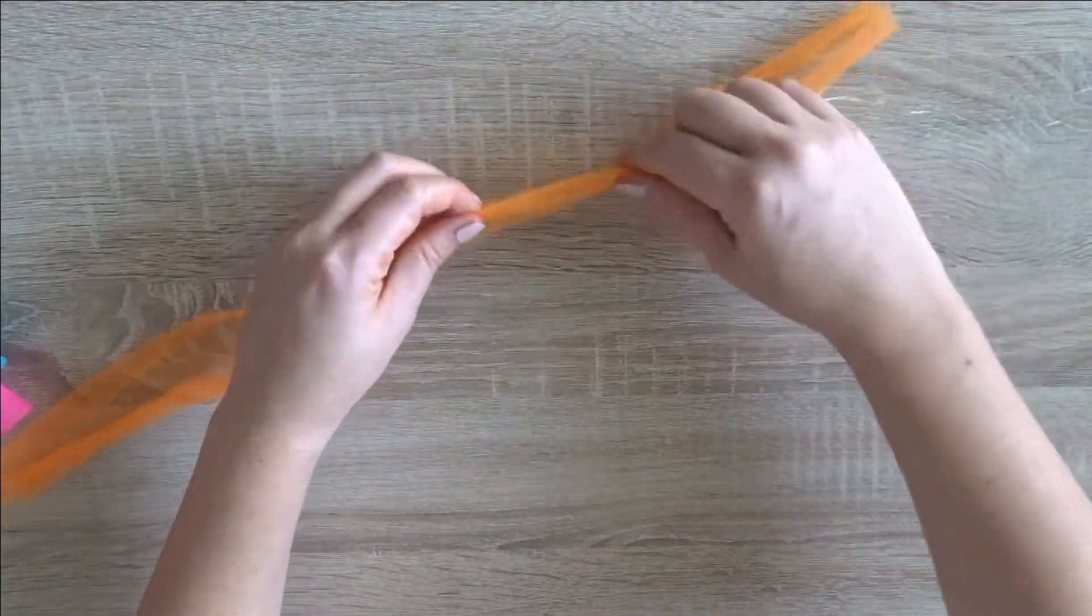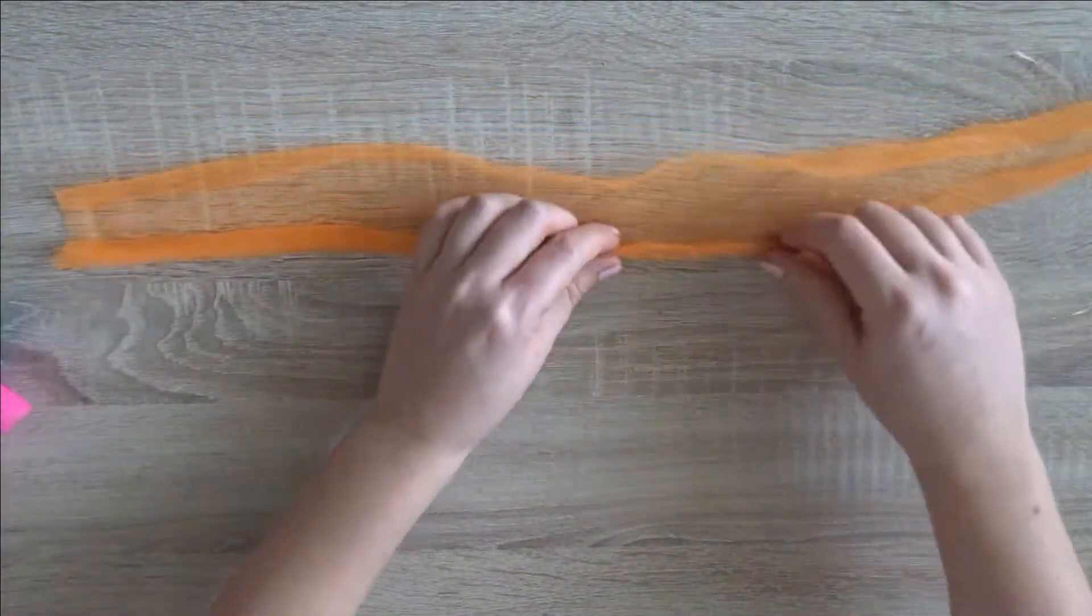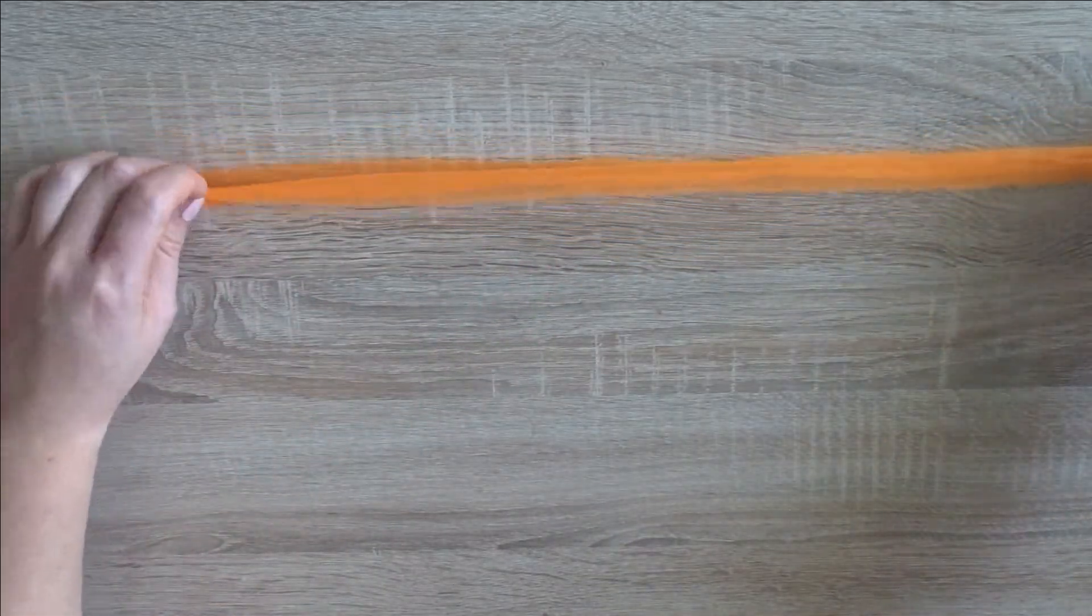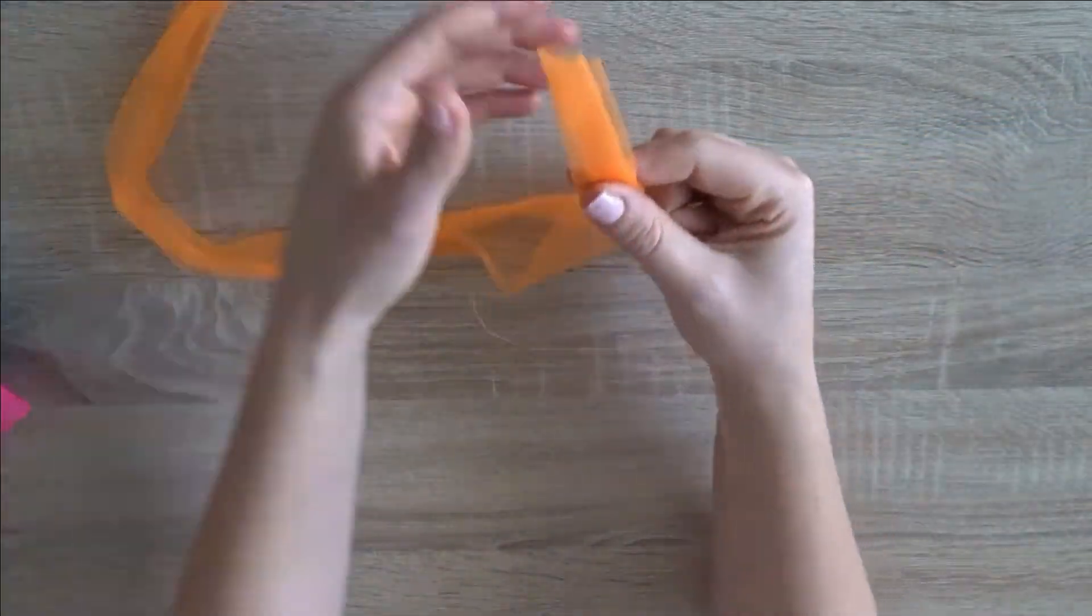You want to fold the tulle so it is nice and narrow, perfect for Barbie body. Then you start sewing it in the middle.